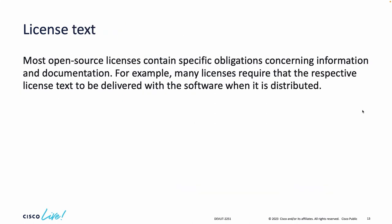Regarding license text: most open source licenses contain specific obligations concerning information and documentation. For example, many licenses require that the respective license text be delivered with the software when it is distributed. So if you copy an open source project and use it in your script or proprietary software as a service and want to redistribute or publish it, you should keep all copyrights and license information in your derived work.